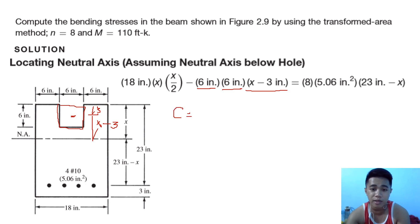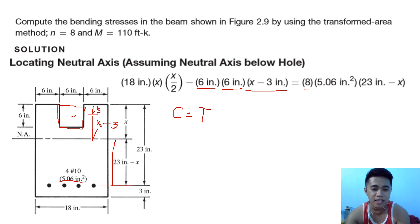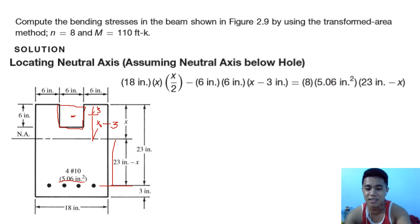The compression side must be equated with the tension side. For the steel, we have n = 8 times the steel area of 5.0 in², and the distance from the neutral axis to the steel is (23 − x) inches. That is how we set up the neutral axis equation — compression moment of area equals tension moment of area.